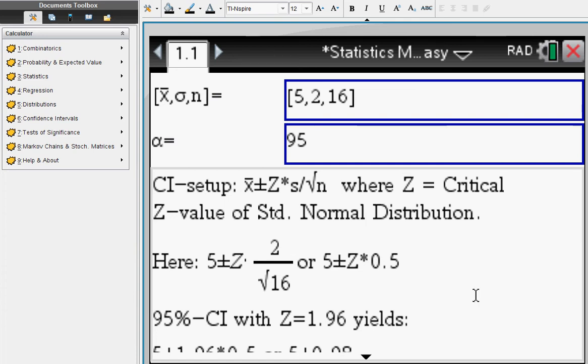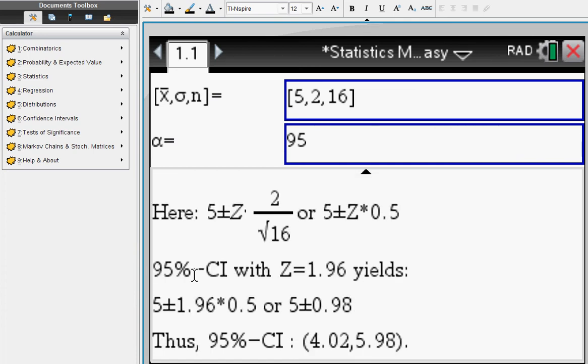Since it's a 95 percent confidence interval, we're going to end up with this confidence interval. Now notice if you change the sample size, you increase the sample size, say to 25.